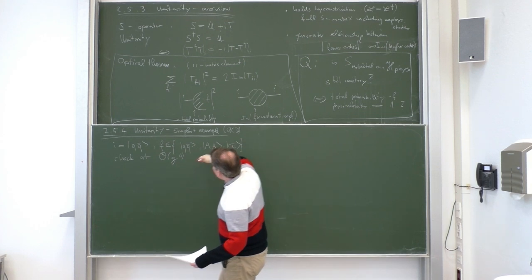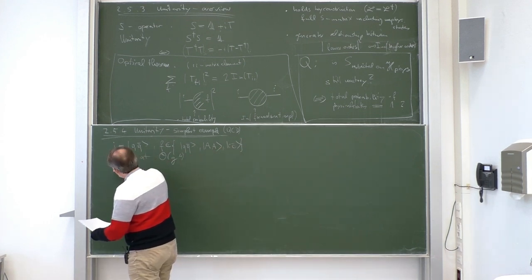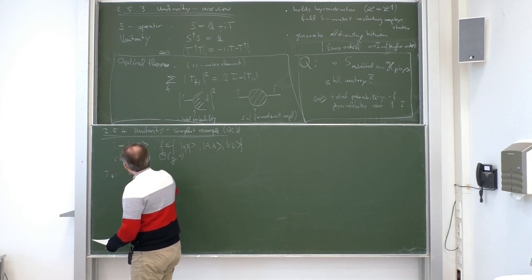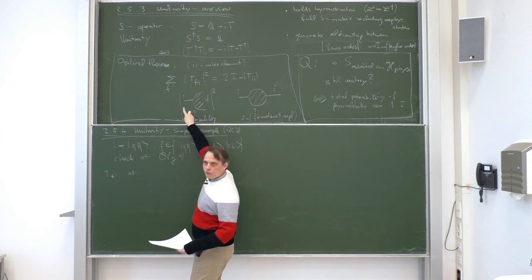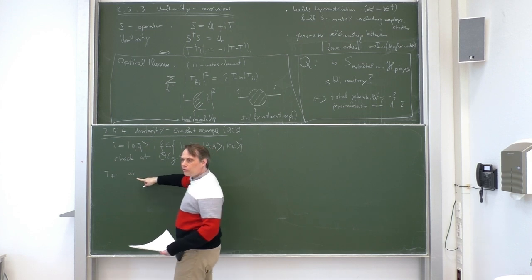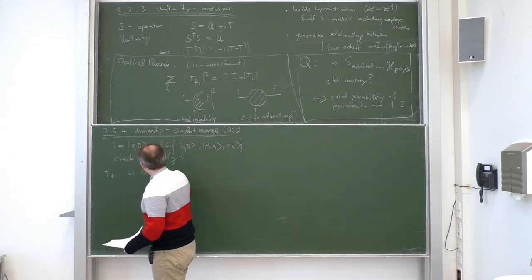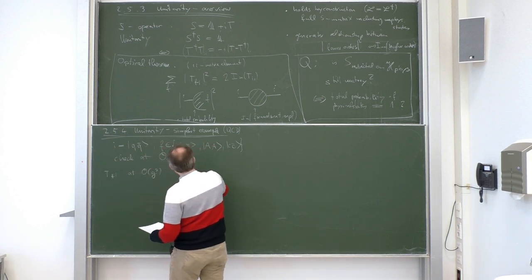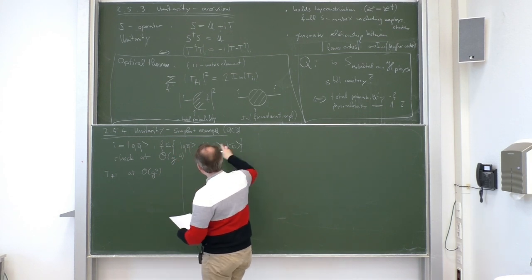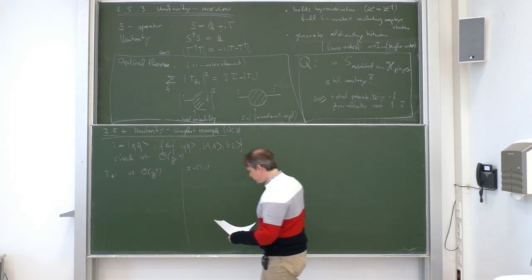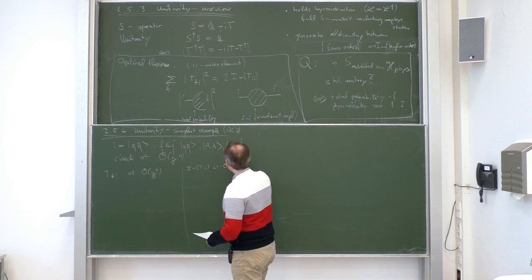On the left-hand side of the table we write the diagrams for T_fi. Since the left-hand side contains |T_fi|² we only need T_fi at second order in the coupling. We write all possible T_fi Feynman diagrams at this order. On the other side of the equation, we need the imaginary part of the forward scattering amplitude T_ii at order g⁴.